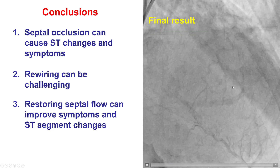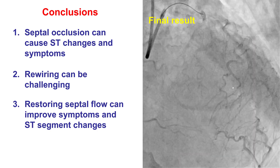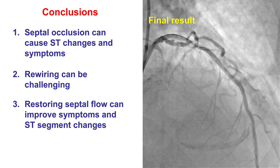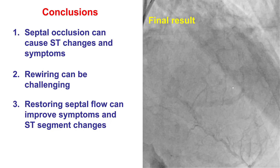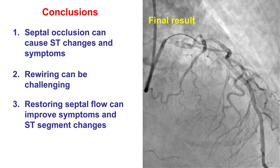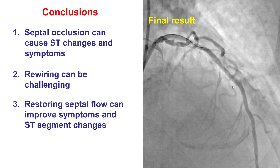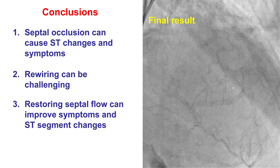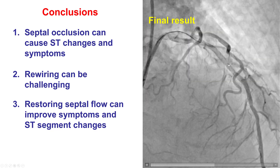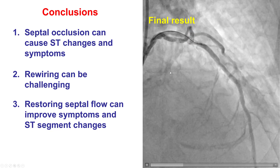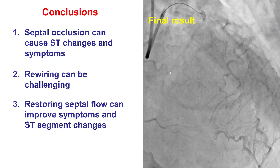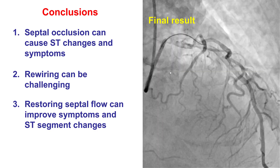In summary, this case illustrates that although septals — and the same applies for acute marginals — are typically not being preserved, as they are not considered large enough branches to be of significant consequence, several cases, including the case we present here, show that those branches can be important and can cause chest discomfort and ST segment depression. If occlusion of such branches occurs, rewiring can be challenging, and it is important to use other vessels as landmarks to identify the origin of the occluded vessel and then recanalize it. We've shown that if we recanalize it, we're able to relieve those changes and improve the patient's symptoms.